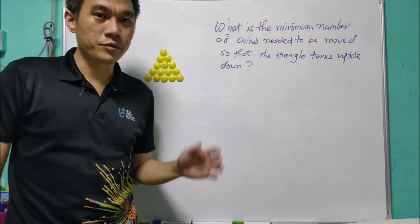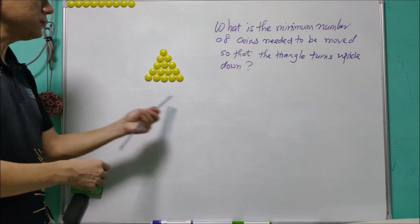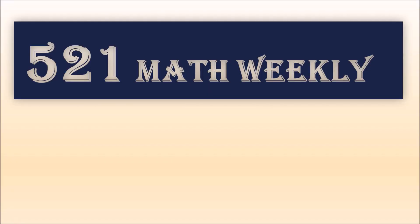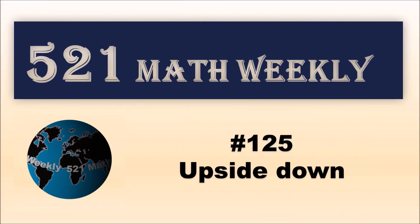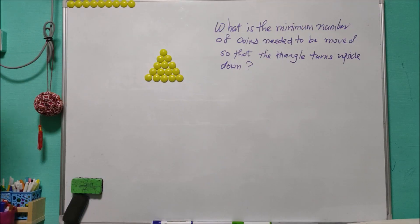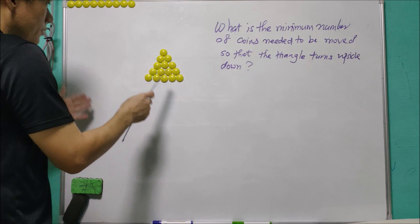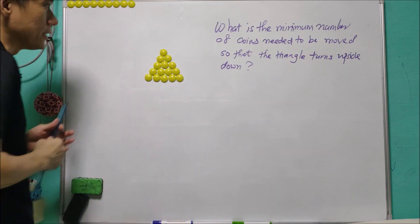Welcome to another math problem of the week: triangles turn upside down. Let's talk about it. For this problem we have a total of 15 coins arranged as a triangle shape as shown here.